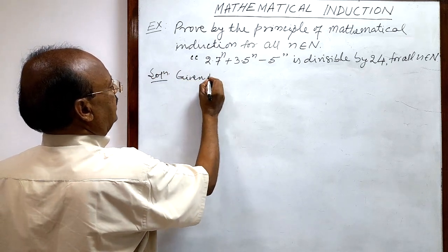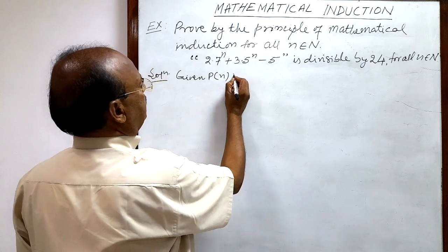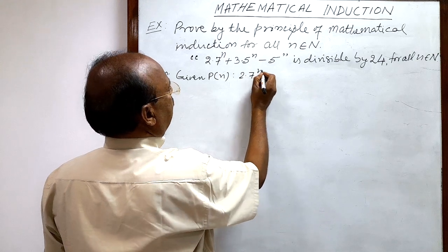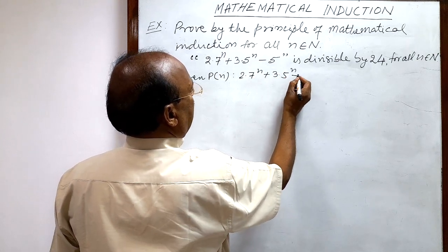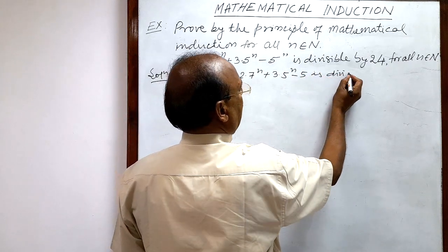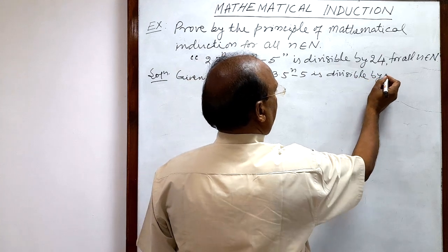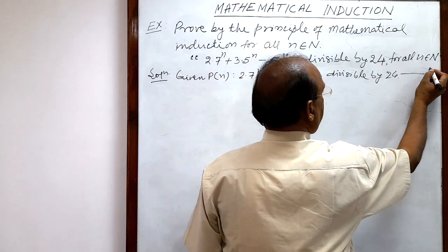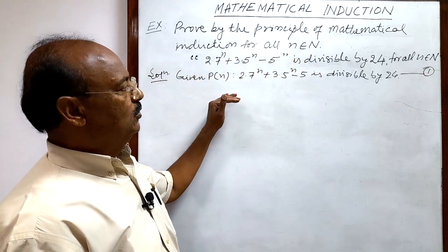The mathematical statement is denoted by the notation P(n). So here, the statement P(n) is: 2·7ⁿ + 3·5ⁿ - 5 is divisible by 24. Let us call this relation number 1.